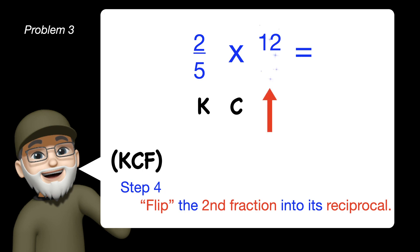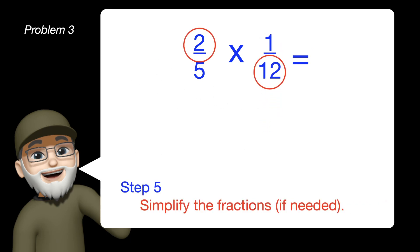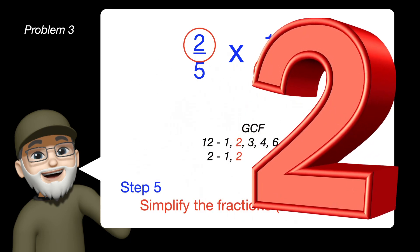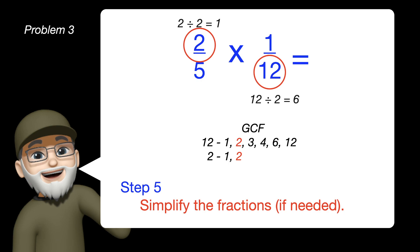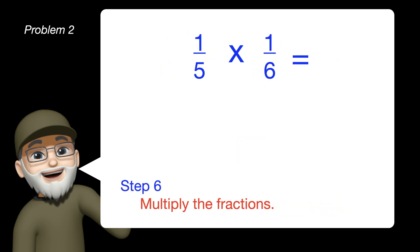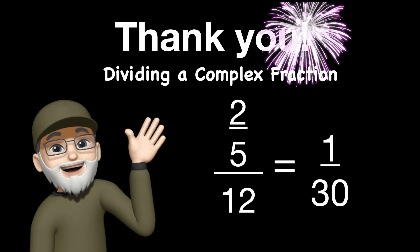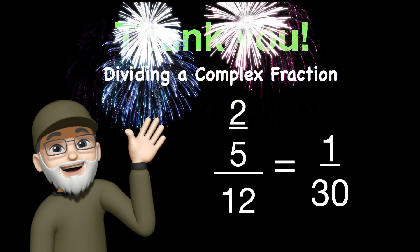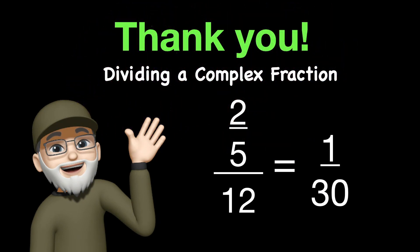Since 12 is a whole number, we can rewrite that as a fraction just writing it over 1, flip it into its reciprocal, simplify. In this case, both are divisible by 2. We can rewrite both of those fractions into their new fraction form, multiply straight across, and we get the answer of 1 over 30. We do not have to rewrite that as a mixed number this time, so our answer is 1 over 30 in dividing a complex fraction. Thank you so much, and we'll see you on the next one.